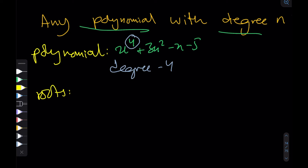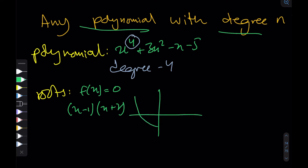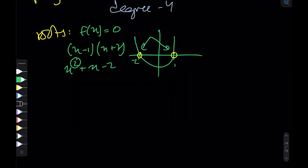Roots are really just points on the plane where the graph cuts the x-axis, or you can think of them as solutions to f(x) = 0. For example, if I take (x minus 1)(x plus 2), its graph cuts the x-axis at exactly two points — minus two and one — which matches our theorem, since this is a degree two polynomial with exactly two roots.